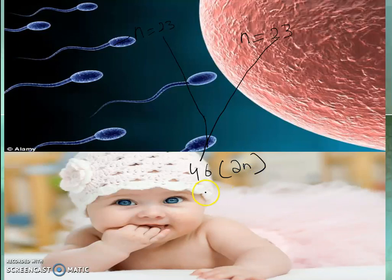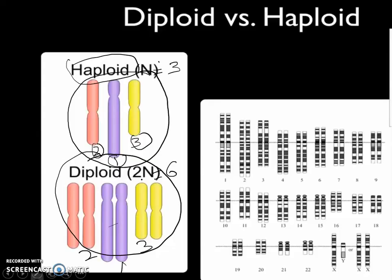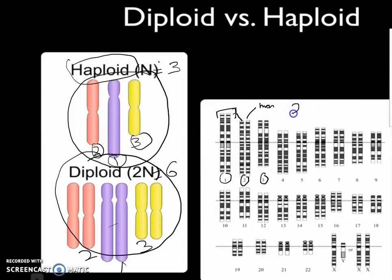When the sperm and egg fertilize to make a baby, each cell of the baby has 46 chromosomes, or 23 pairs — so 2N. They have two sets of chromosomes. Chromosome 1 has two sets, chromosome 2 has two sets, chromosome 3 has two sets. One chromosome comes from your dad and one comes from your mom. So 2N equals 46 — these cells are diploid.